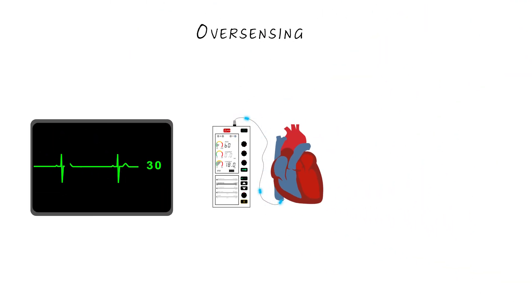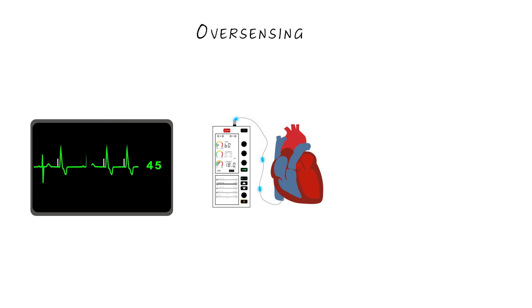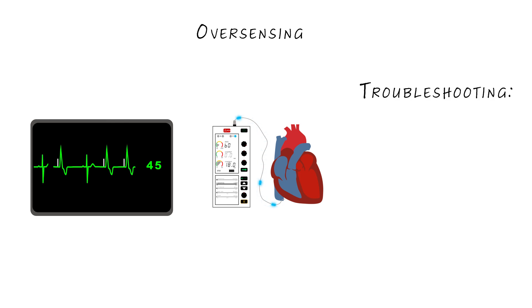On the monitor, over-sensing can look like failure to pace with no pacing spikes, or there might be an occasional pacing spike that hasn't been inhibited. You can tell the difference from failure to pace by looking at the pulse generator. With over-sensing, the sensing light will be flashing out of sync with the QRS complexes and usually flashing very quickly. In failure to pace, neither light will be flashing.